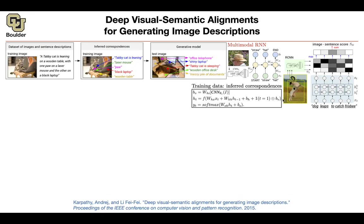We are going to take an input image and put bounding boxes on it corresponding to maybe 19 objects, giving us 20 images to work with — the original plus 19 regions. Each image region can be turned into a vector using convolutional networks. For illustration, if you have three boxes — the entire image, the dog, and another object — that gives you three vectors. Similarly for your sentence: you convert words into vectors that capture context using bidirectional LSTMs, giving one vector per word.